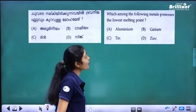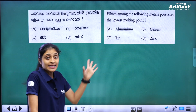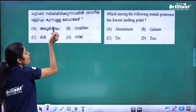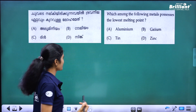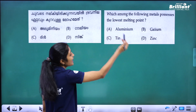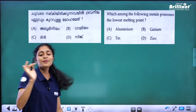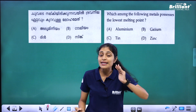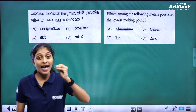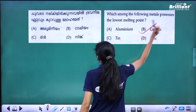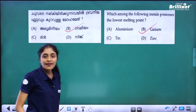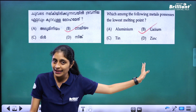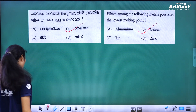Next question: which among the following metals has the lowest melting point? The options include aluminum, gallium, tin, and lead. The metal with the lowest melting point is gallium.